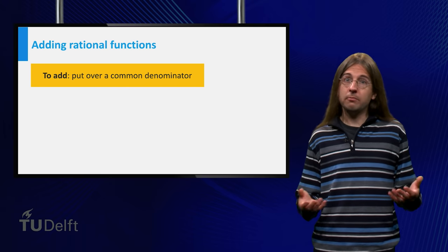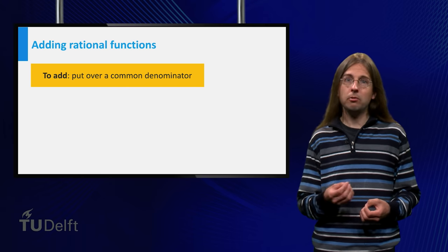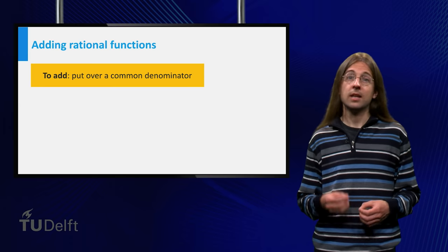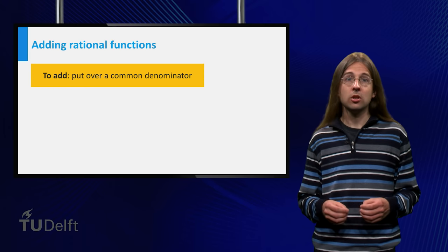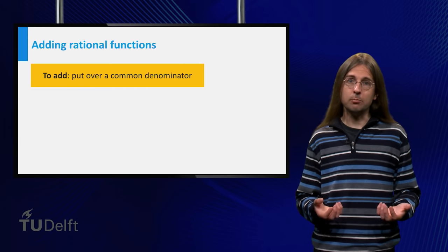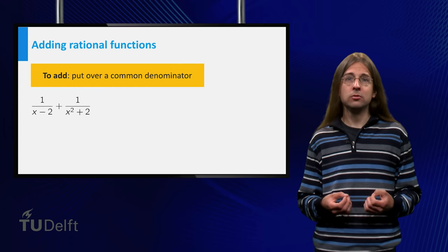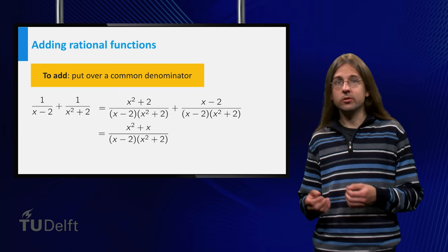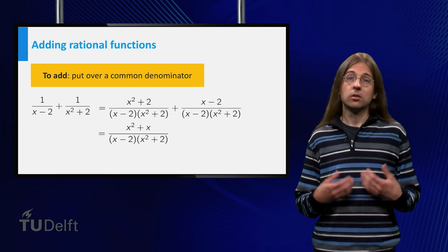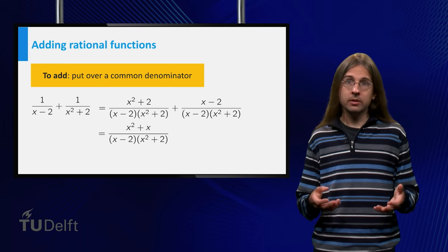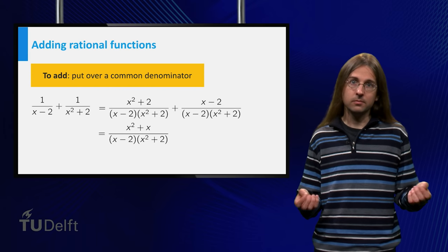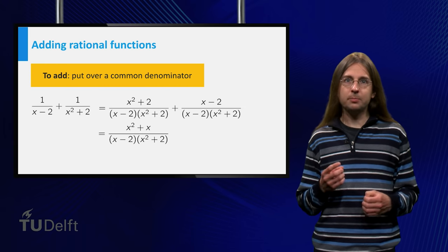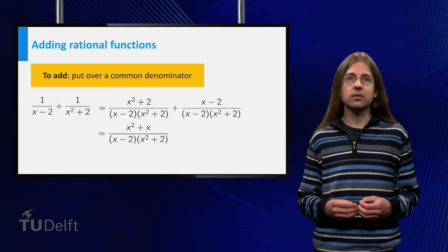You can calculate with rational functions just as you are used to with ordinary fractions. In particular, if you want to write a sum of two rational functions as a single fraction, you have to put both terms over a common denominator. For example, if we add 1 over (x minus 2) plus 1 over (x squared plus 2), we use (x minus 2) times (x squared plus 2) as a common denominator. The result is (x squared plus x) over (x minus 2) times (x squared plus 2). Typically, factored expressions are easier to work with, so refrain from expanding the denominator unless you have a good reason to expand.